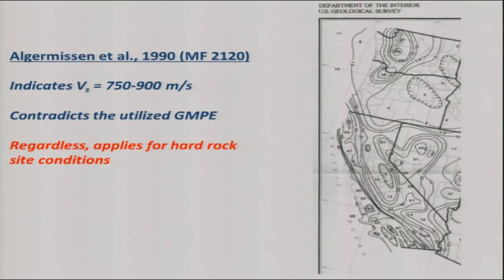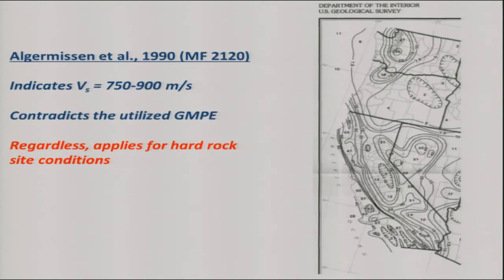Those GMPEs were used by Algermissen to create the maps. The documentation describes the maps as useful for velocities corresponding to a firm rock condition. VS30 would probably be a little bit higher than the surface velocity described. Basically, it's a ground motion map for a firm rock condition — that was the mindset at the time the NEHRP factors were developed.